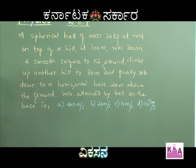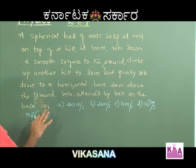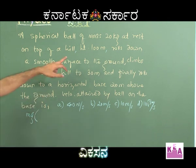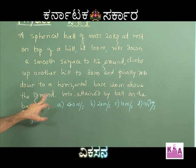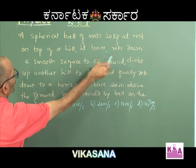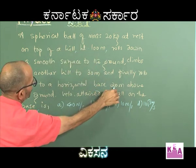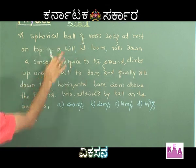I will write the work done by the gravitational force — the gravitational force into the displacement undergone in the vertical direction. The ball was at a height of 100 meters and finally it is at a height of 20 meters above the ground. So 100 minus 20.